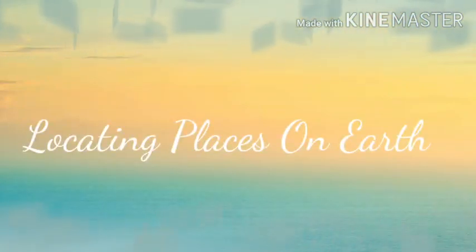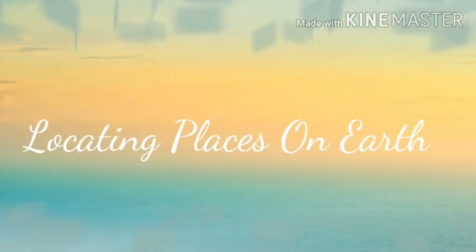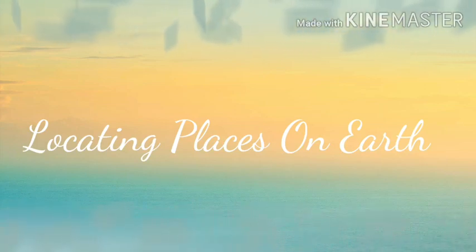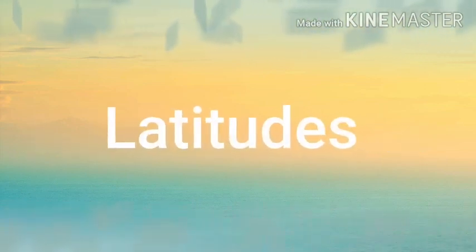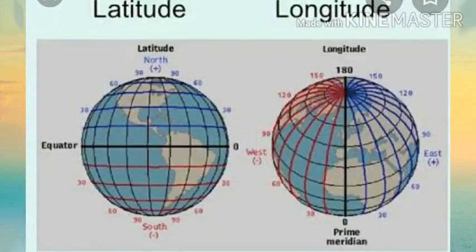Hello children, today I'll tell you how we locate places on earth. Latitudes and longitudes help in locating places on the earth. They form grids which enable us to locate places.